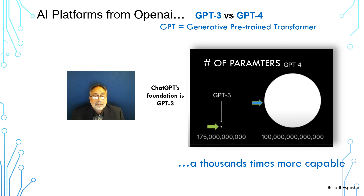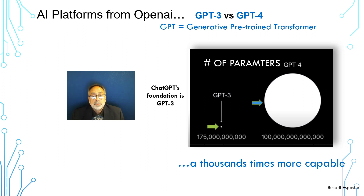If you look at the graphic in the middle of the screen, the small green arrow points to a small white dot — that's the number of parameters in GPT-3, the foundation of ChatGPT. The blue arrow points to a very large white circle, which shows the number of parameters in GPT-4. It's much larger and much more capable. In the next slide we'll see exactly how these two compare with some examples.